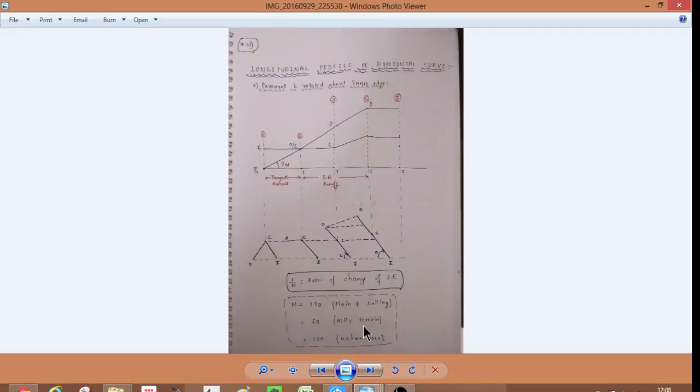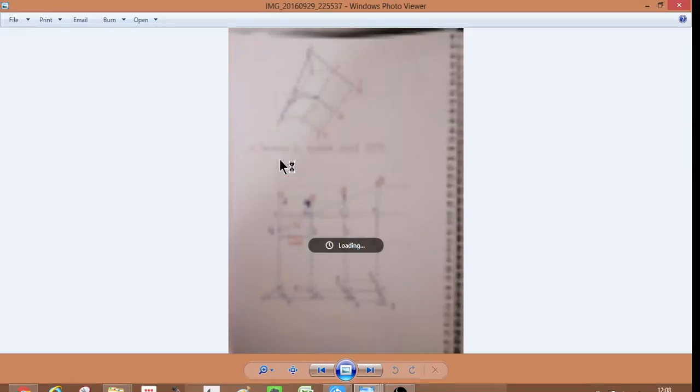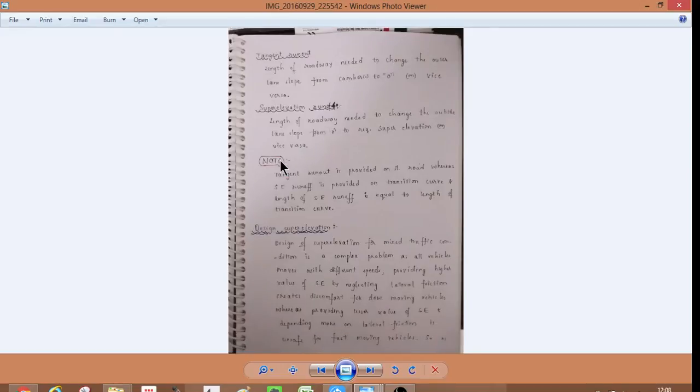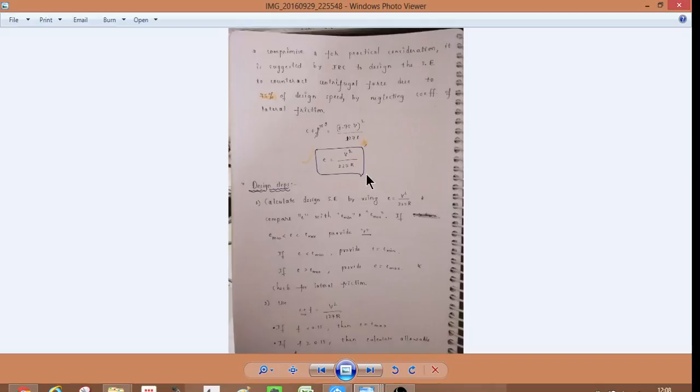So, when pavement is rotated about central line over the embankment then there is no drainage problem. In hilly area, central line rotation is preferred because earthwork is balanced. In heavy rainfall area, inner edge is preferred to ensure proper drainage. So, longitudinal profile of horizontal curve. So, in this and the values of N are given, you may not remember this. So, this is how the slope of the road is changing from here to here. This is from one side. Sorry, one end is this. And then, design super elevation E is equal to V square by 225R. This super elevation is considered when there is no friction and user drives at the speed of 75 percent of the design speed.